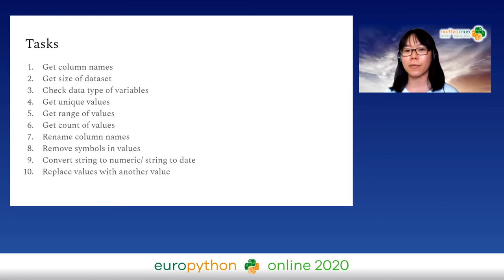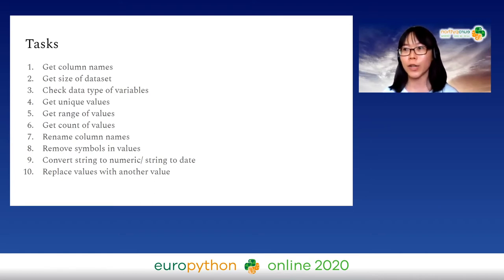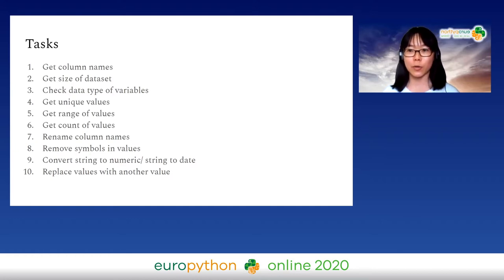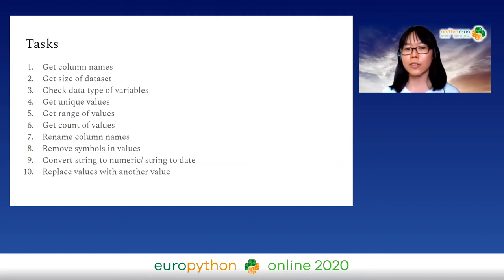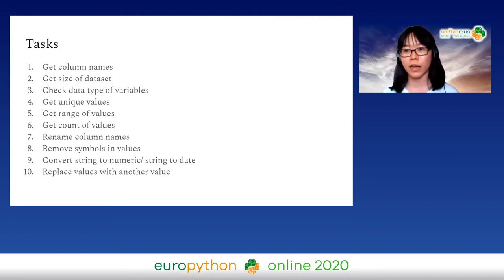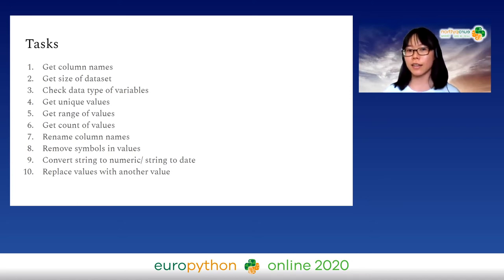Whenever we get a dataset, we first want to know what variables are in it — so we query for column names. Then we want to confirm that Python read the data correctly, whether using Spyder or Jupyter Notebook — checking that all records were loaded in. Next, we want to understand the data types of our variables, because when reading data using pandas, the library automatically tries to detect data types.